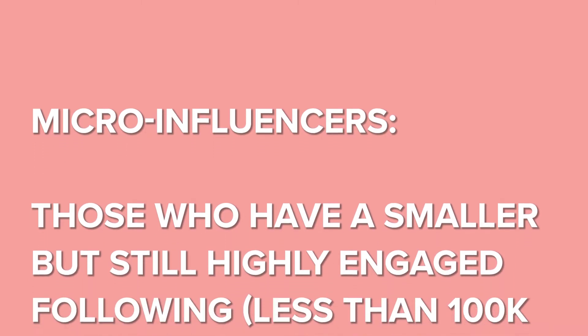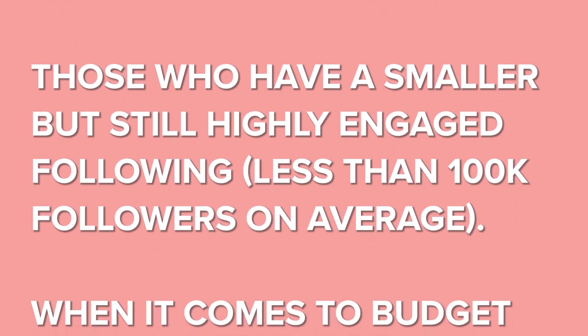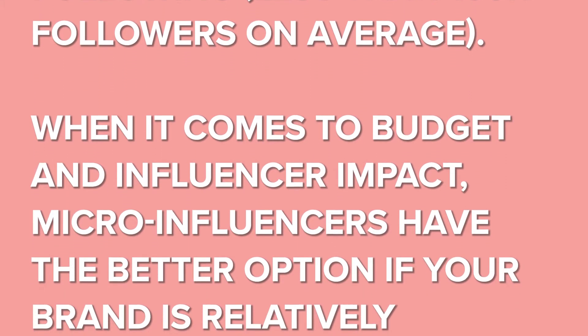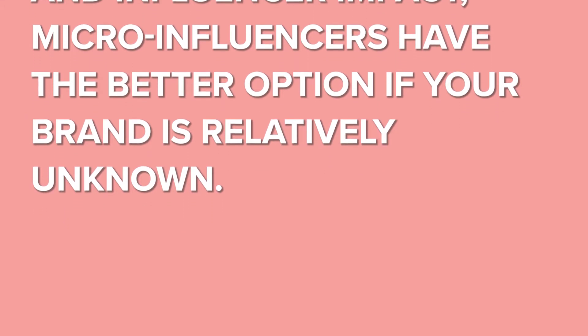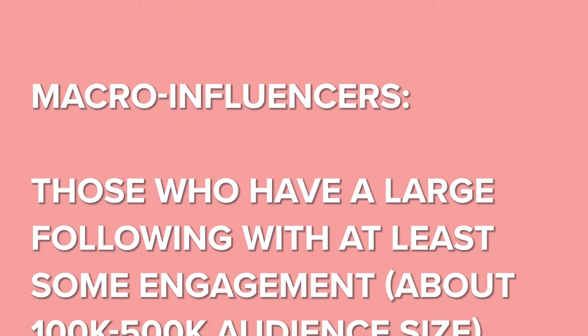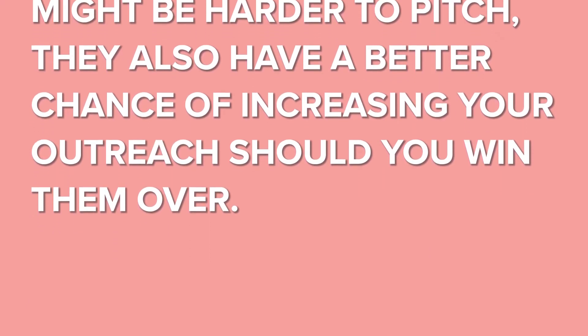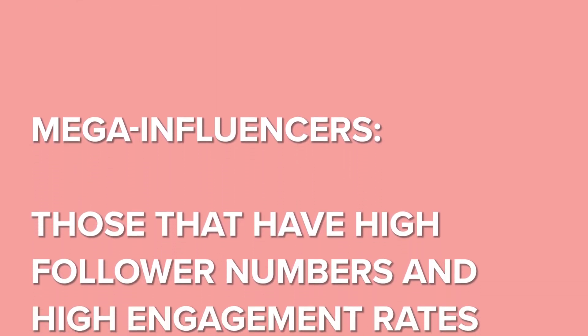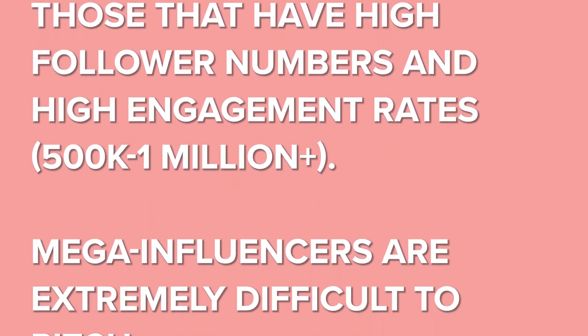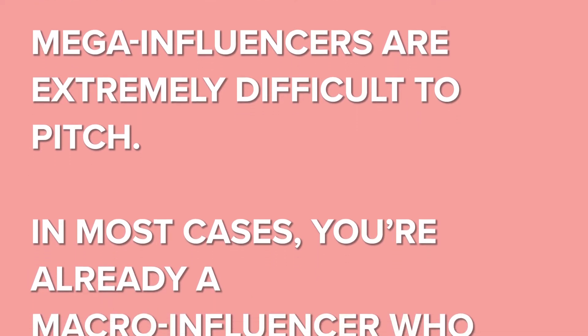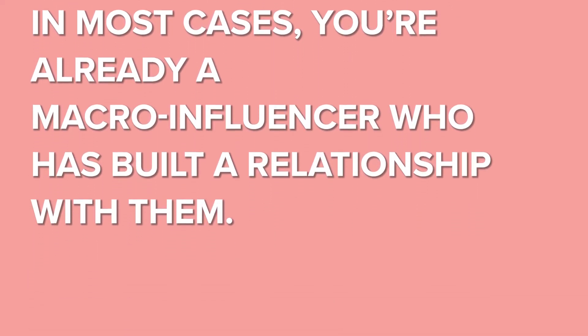So here are the different types of influencers to consider. The first one: micro-influencers — those who have a smaller but still highly engaged following, probably less than 100k on average. Micro-influencers are the better option if your brand is relatively unknown. The second one: macro-influencers — those who have a large following with at least some engagement, 100k to 500k audience size. While a macro-influencer might be harder to pitch, they also have a better chance of increasing your outreach should you win them over. The third one: mega-influencers — people with a high number of followers and high engagement rates, 500k to a million plus. Mega-influencers are extremely difficult to pitch, and in most cases you're already a macro-influencer who has built a relationship with them. It's not impossible, but you may find more success trading up the chain and starting with smaller influencers.